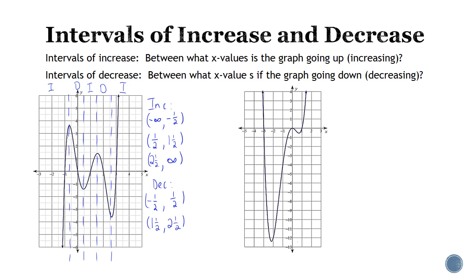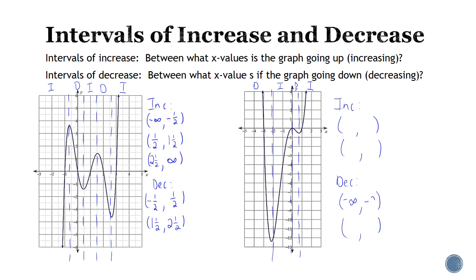For the second graph, we have switching points here, here, and here. It starts decreasing, then increasing, then decreasing, and then increasing — so we have two intervals of each. The first decreasing interval starts at negative infinity and decreases until about negative two. Then it increases from negative two to zero. The next interval decreases from zero to about three fourths. Then the second increasing interval starts at three fourths and goes to positive infinity.